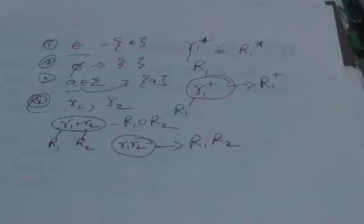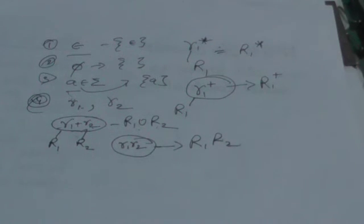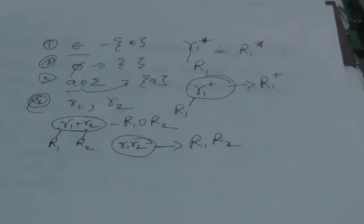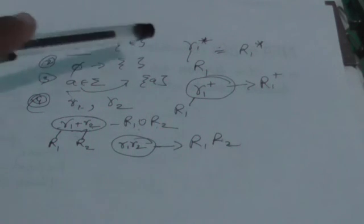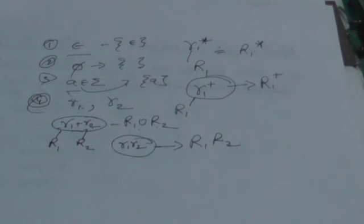Phi is also a regular expression, and the regular set corresponding to phi doesn't contain any element — that is, it is the null set. Any symbol 'a' which belongs to the set of input symbols of a finite automaton is also a regular expression, and the regular set corresponding to it is a set containing only that input symbol 'a'.